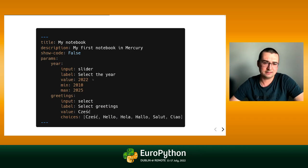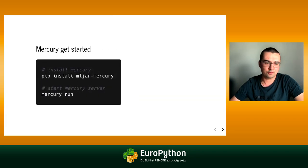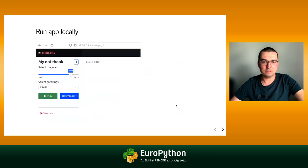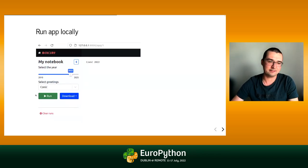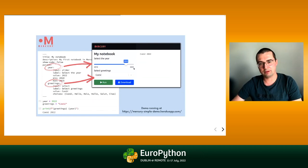The year widget is a slider with the label 'Select year' and the value 2022. The greetings widget is a select widget with label, value, and other choices. You install Mercury with pip, then run 'mercury run' in the directory with your notebook. A local server starts, and the user can change widget values, click run, and the whole notebook is recomputed — showing only the output. The parameter names must be the same as the variable names you want to control with the widgets.